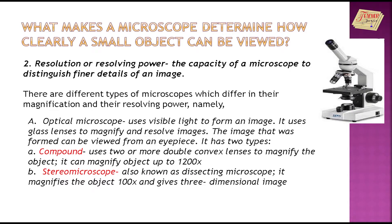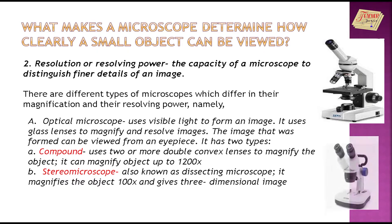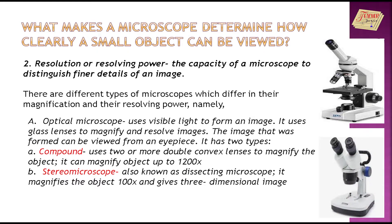Compound microscope uses two or more double-convex lenses to magnify the object. It can magnify objects up to 1,200 times. Stereo microscope, also known as dissecting microscope, magnifies the object 100 times and gives a three-dimensional image.